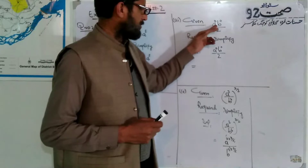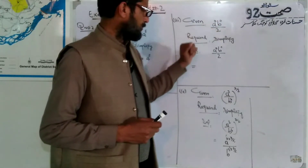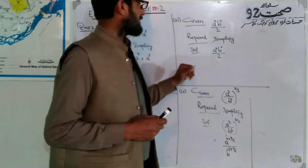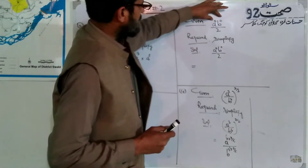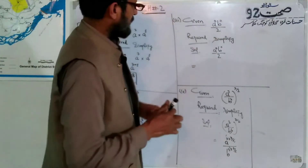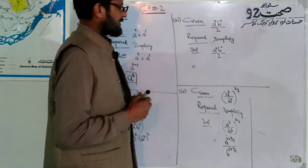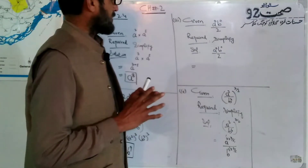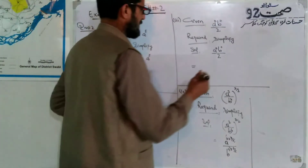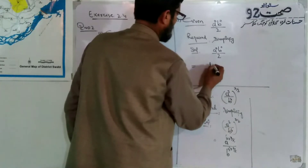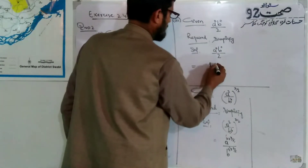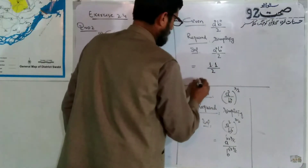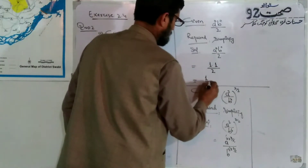Required to simplify: A power 0, B power 0 over 2. As we know that any real number having power 0 equals 1. Therefore A power 0 and B power 0 are both equal to 1, giving us 1 over 2.